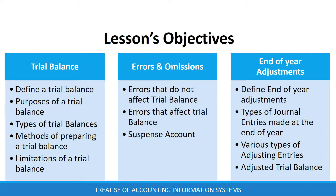On errors and omissions, we are going to discuss errors that do not affect trial balance, errors that affect the agreement of a trial balance, and a suspense account. Lastly, on end of year adjustments, we are going to define end of year adjustments, types of journal entries made at the end of the year, and discuss various types of adjusting entries and adjusted trial balance.